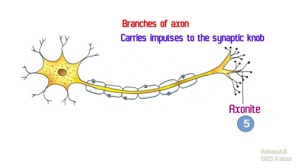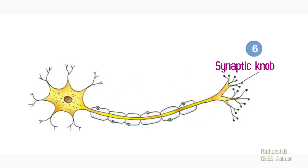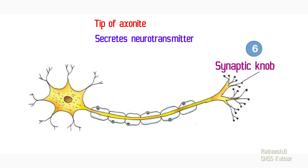The next part of a neuron is synaptic node. The synaptic node is the tip part of axonite. We can see small ball-like structures at the tip of axonite, and these small ball-like structures are called synaptic node. The function of synaptic node is to secrete neurotransmitters, which are certain chemicals. We can discuss neurotransmitters in detail in the next part.